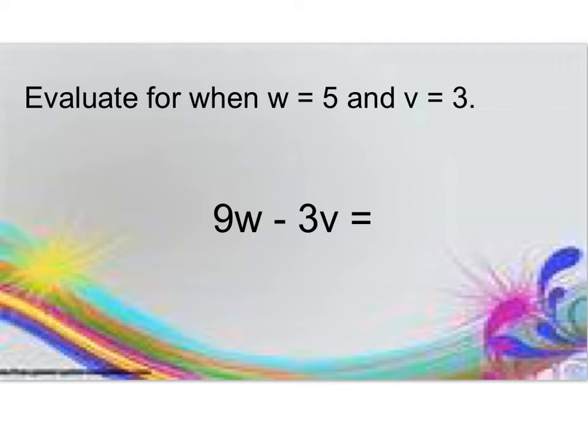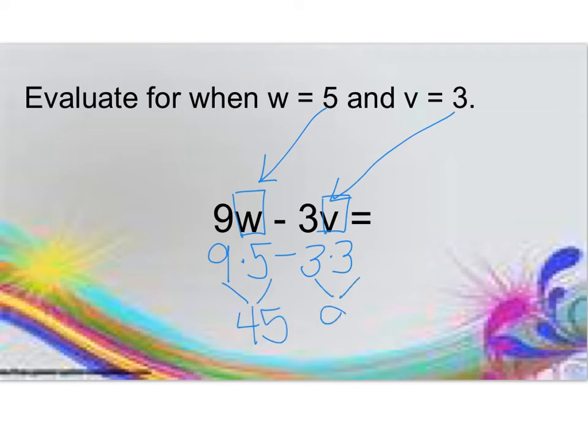Try this one on your own. Pause me and come back for checking. Remember that we have 9 groups of 5, not 95—that's 9 times 5. We have 3 groups of 3, not 33—that's 3 times 3. Following order of operations, 9 times 5 is 45, and 3 times 3 is 9, and 45 minus 9 is 36. I hope you got that right.